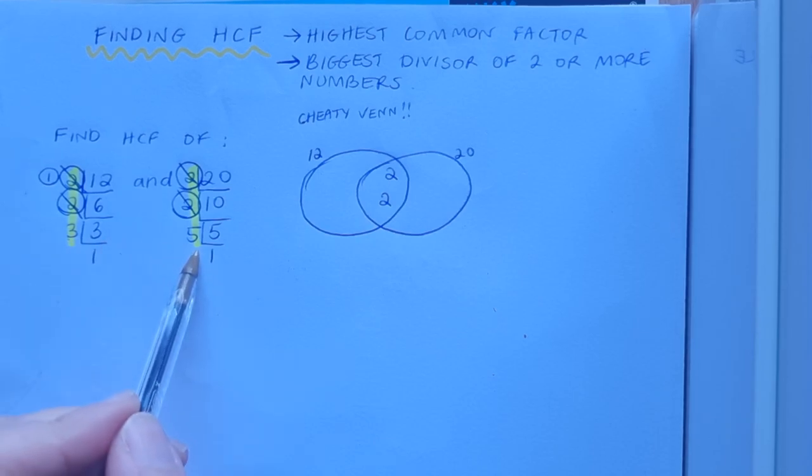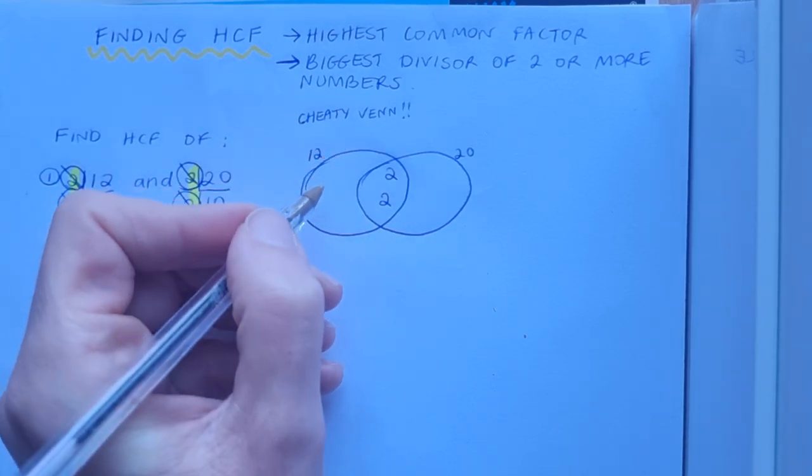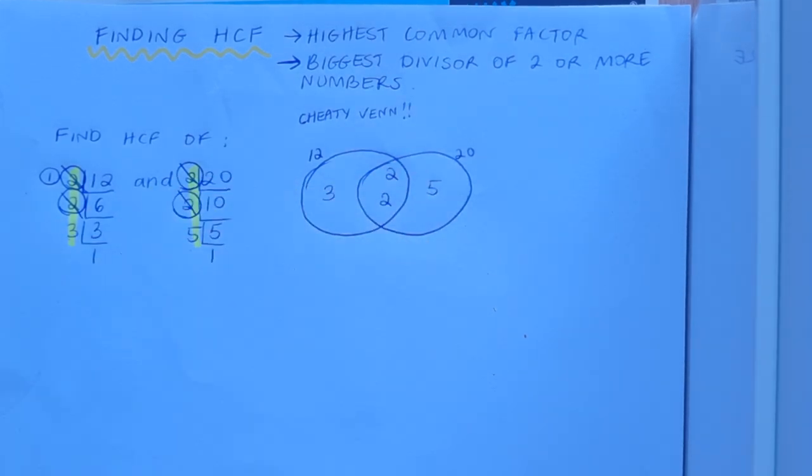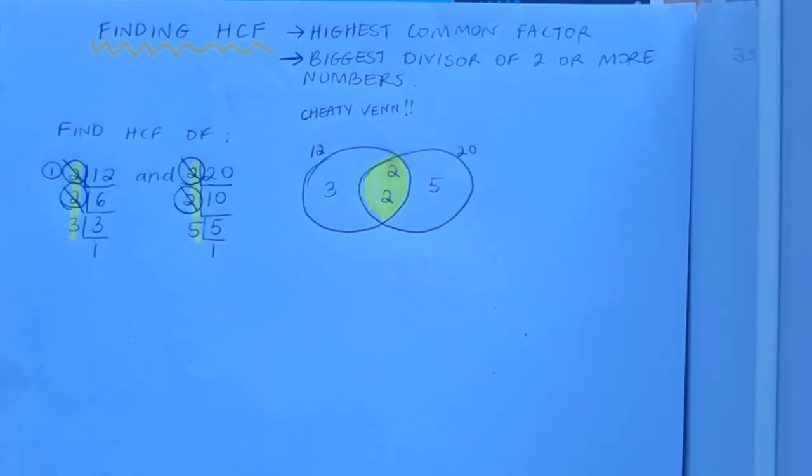The 3, no 3 over here. So the 3 is just in the 12 set so it's going to go in here. And the 5 is just in the 20 set so it's going to go in here. My cheaty Venn is complete and the intersection is where I look for the highest common factor. And I'll get it by finding the product of the numbers that are in that section. So 2 by 2 is 4.